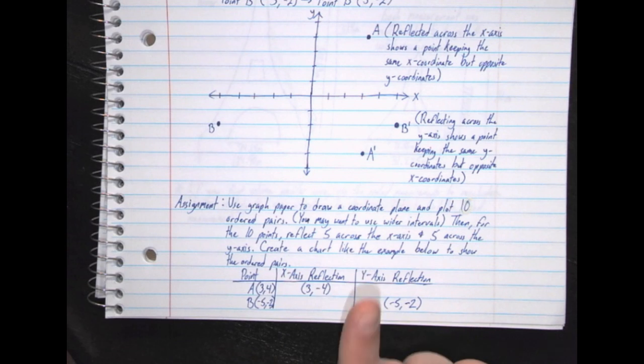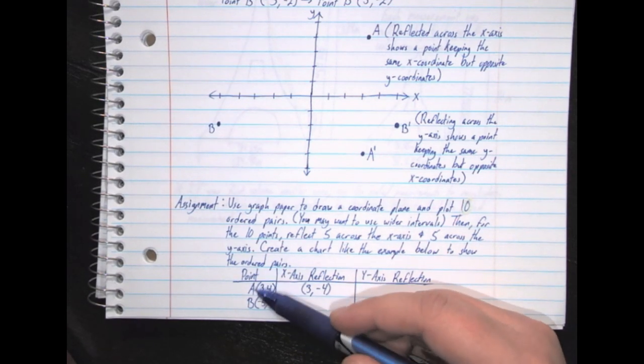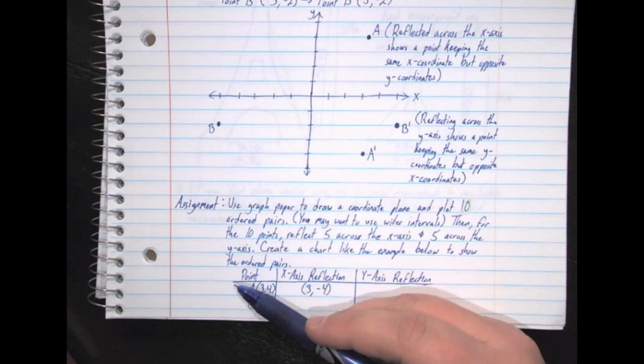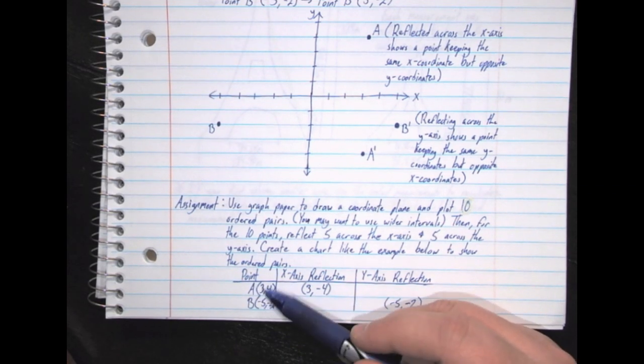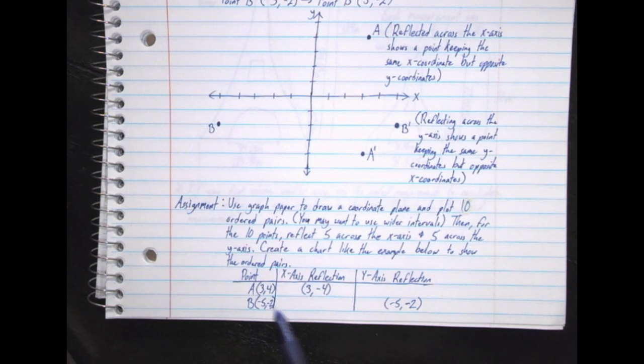And then, you're going to choose 5 of those ordered pairs to reflect across the x-axis. Then, choose 5 to reflect across the y-axis. You're going to create our chart to show the ordered pairs. So, you have your 10 over here in this column for points. You're going to have point A, B, C, and so on, until you have 10 points. And then, you're going to select 5 of those that you're going to write what the point would be if you reflected it across the x-axis, and then 5 more for if you reflected across the y-axis.